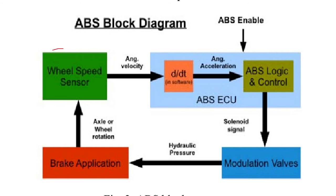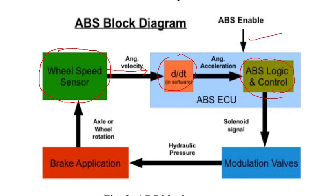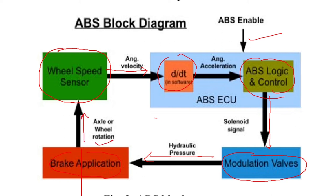Now you can see the same thing in a block diagram. The first point is the wheel speed sensor — status of the wheel speed — then it is given to the anti-lock brake system, in which angular velocity is first converted into angular acceleration. Then the ABS logic works out where you enable the system, giving a command to the modulation valves — the brake control unit — and then hydraulic pressure is released and mechanical brakes are applied here.